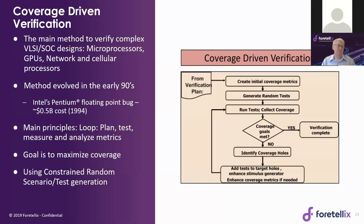All the complex microprocessors and GPUs in your laptops and cell phones are verified using this method. The method came out of a crisis: in the early 1990s, Intel had a serious bug in floating-point number calculation in the Pentium processor, which cost Intel half a billion dollars. Intel then invested heavily in developing this method. The main principle is that you continuously plan what you want to cover, test, analyze, find coverage holes, and maximize coverage across the full space — using a lot of randomization techniques to create many tests.